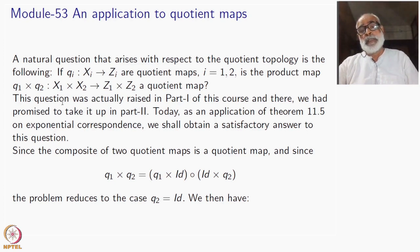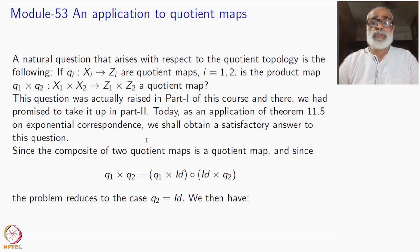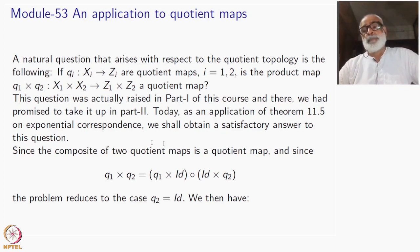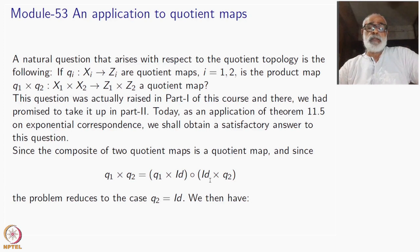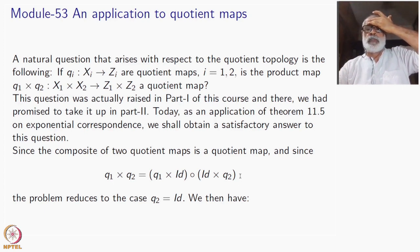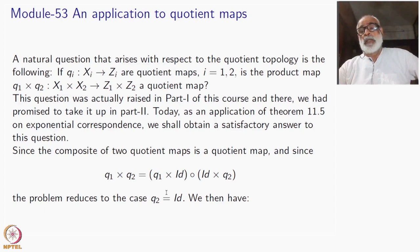Here is the satisfactory answer. This question was actually raised in part 1 itself when we were studying quotient maps. Today we will have a satisfactory answer. q_1 cross q_2 can be written as (q_1 cross identity) composite (identity cross q_2). This is just a set-theoretic fact for any function of product sets. If I have shown that each one on the right-hand side is a quotient map, then the composite of quotient maps is a quotient map, and therefore q_1 cross q_2 will also be a quotient map.